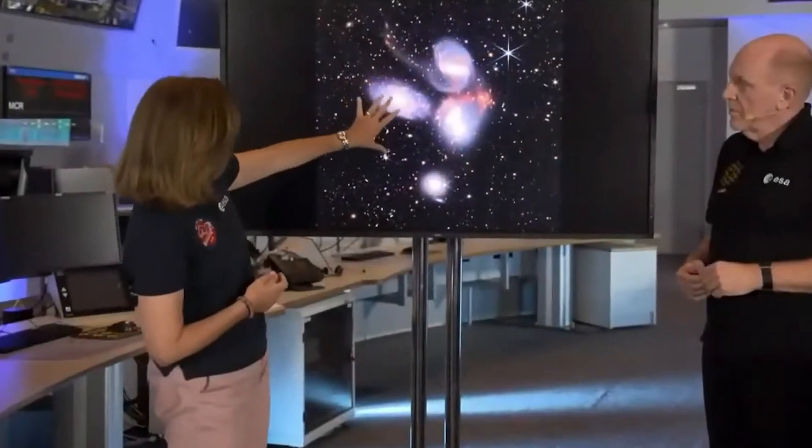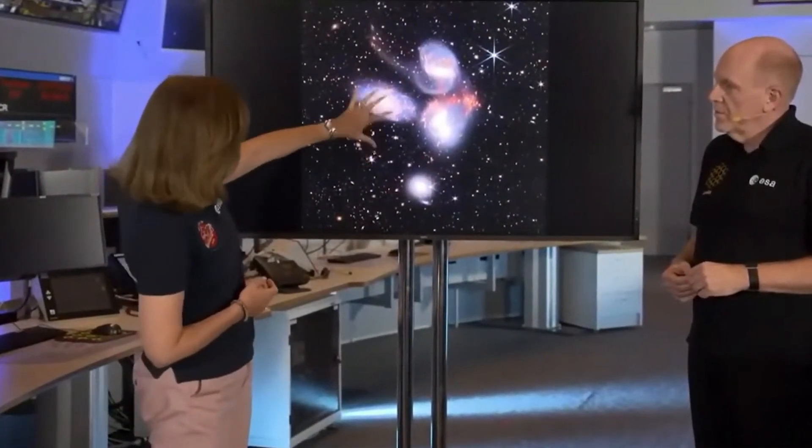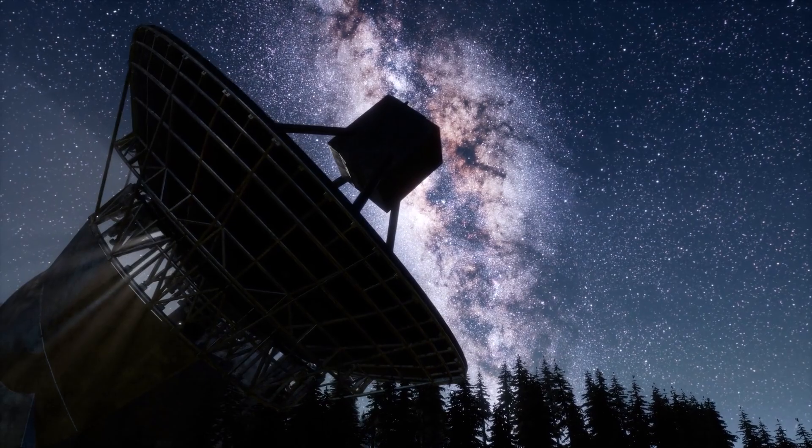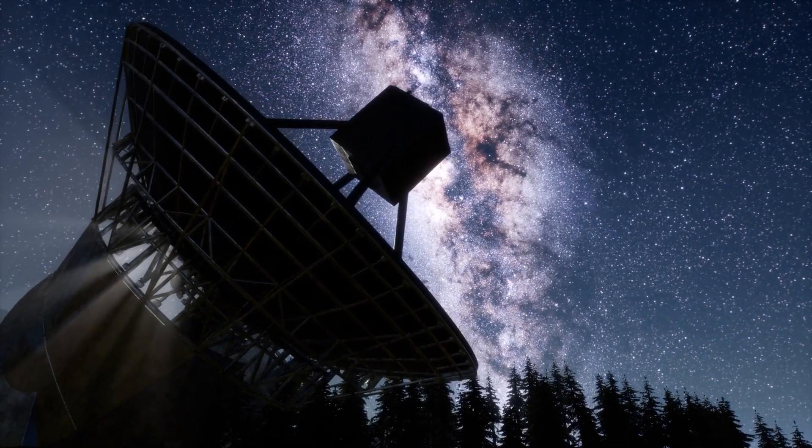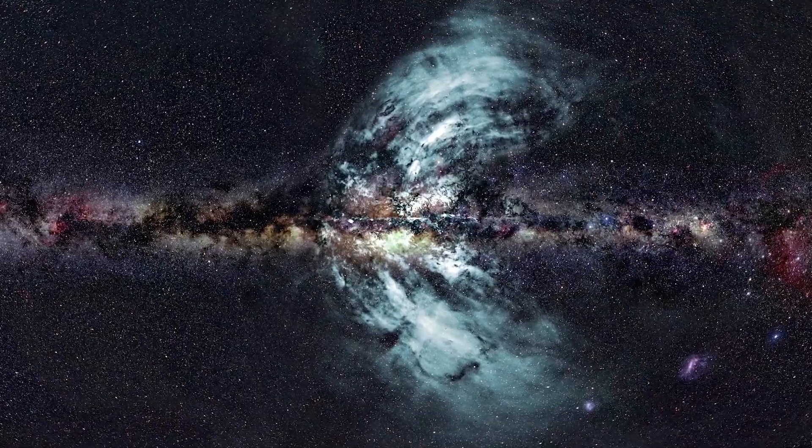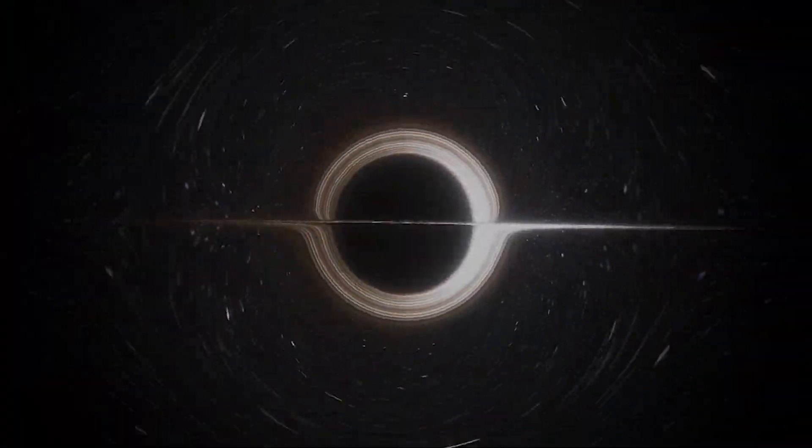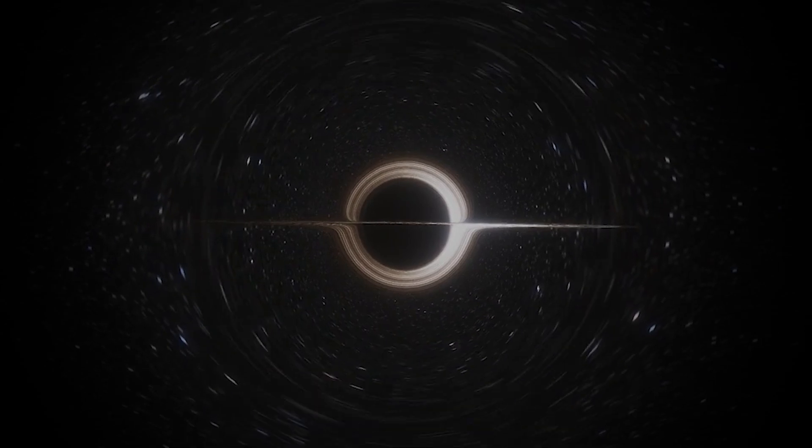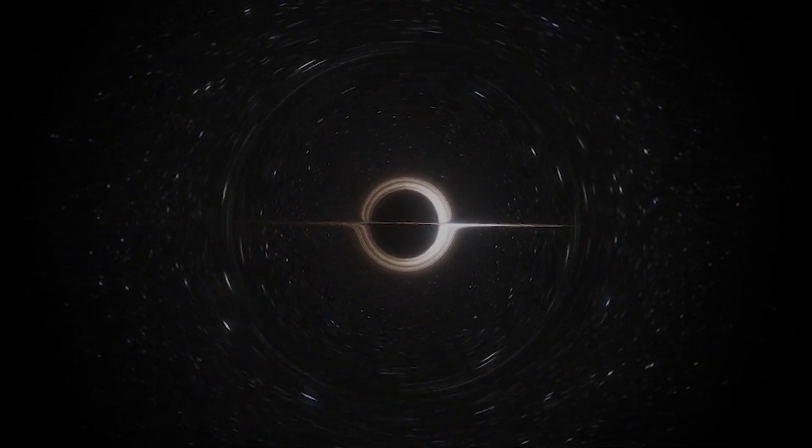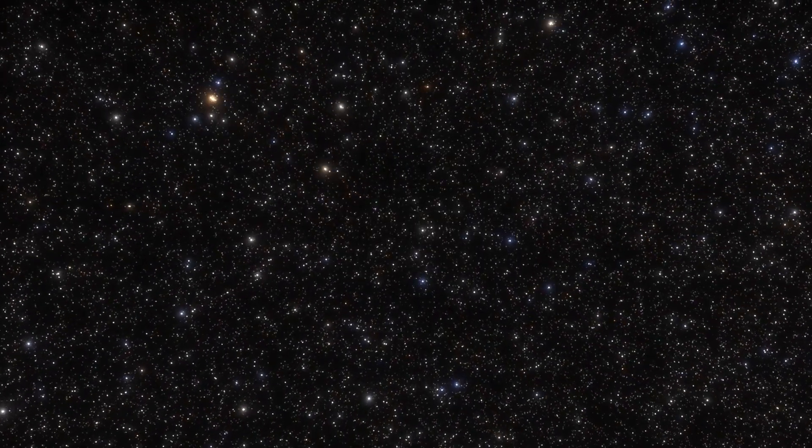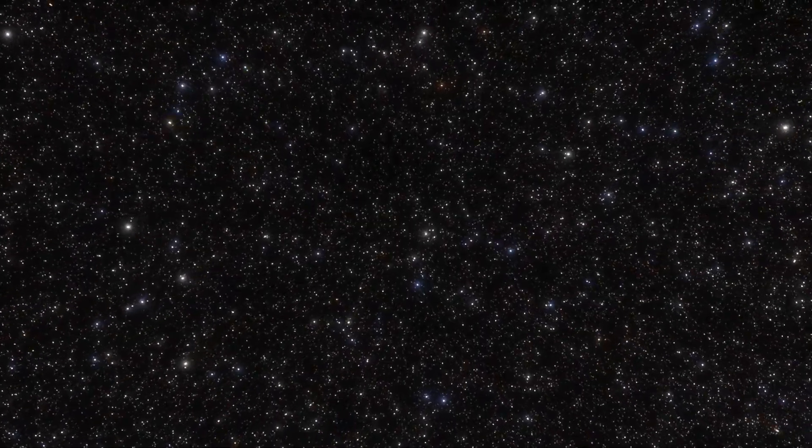Astronomers identified it through the Low Frequency Array, LOFAR, a network of radio telescopes scattered across Europe. This mammoth galaxy boasts two colossal plasma plumes stretching over 100 Milky Ways in diameter, emanating from a supermassive black hole at its center. These plumes contain the raw materials necessary for the formation of stars.